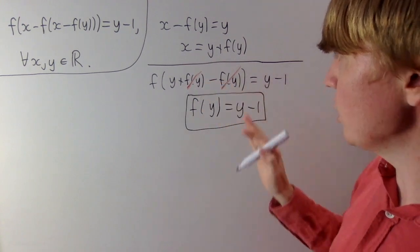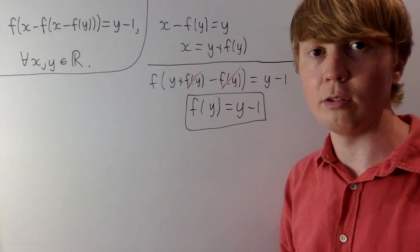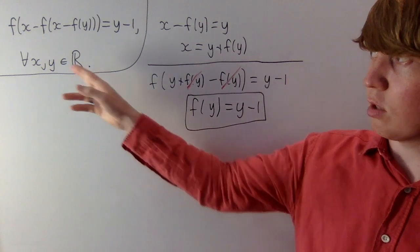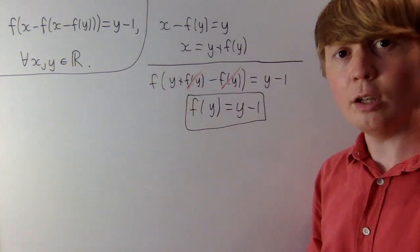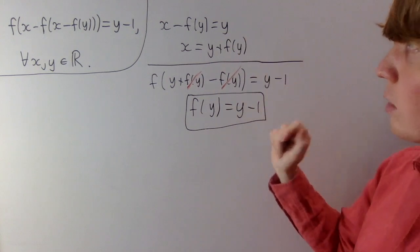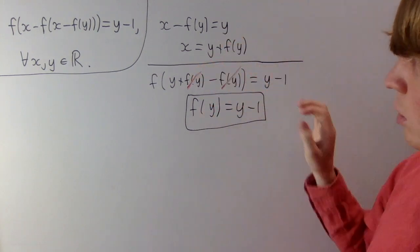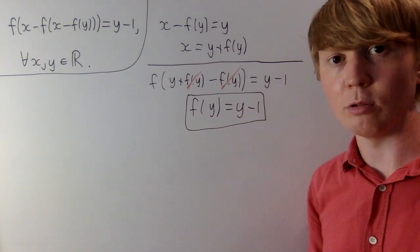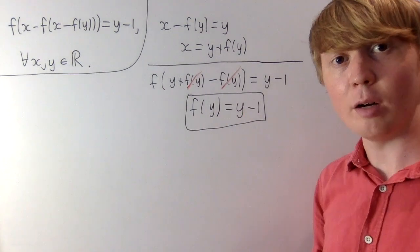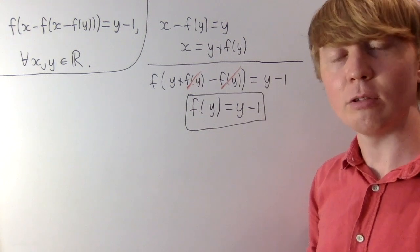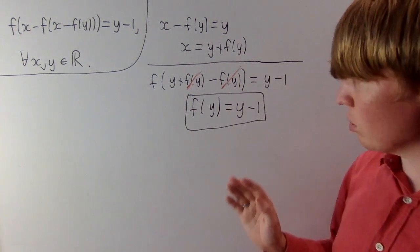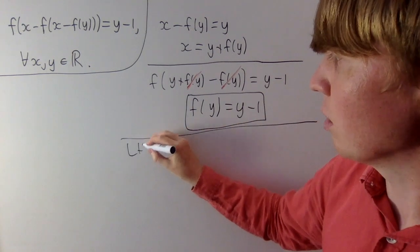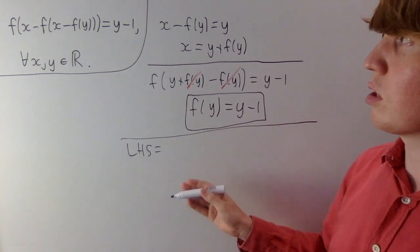I'm going to claim that this is going to be the only solution, if it is indeed a solution, just like for the first example. Our functional equation is true for all x and y. All we've done is said, for some specific values of x this is true, then followed a logical sequence of steps. So the functional equation implies that f(y) equals y minus 1. Similarly, our first functional equation implied f(y) equals minus y over 3. We still need to do this verification step to make sure this is indeed a solution and that the functional equation doesn't just have no solutions.